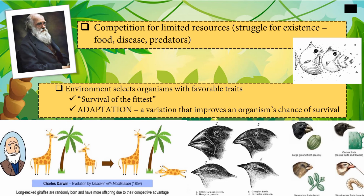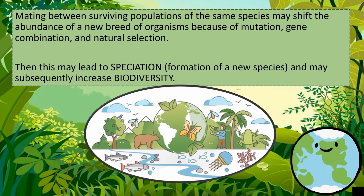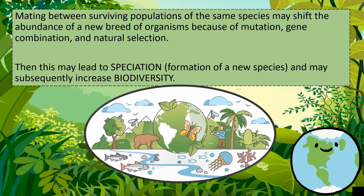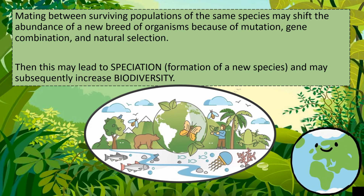Longer-necked giraffes survived because they were a better fit for their environment. It is from this idea that we get the phrase 'survival of the fittest.' Mating between surviving populations of the same species may shift the abundance of a new breed of organisms because of mutation, gene combination, and natural selection. This may then lead to speciation, or the formation of a new species, and may subsequently increase biodiversity.